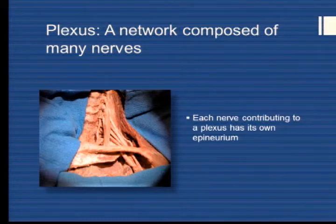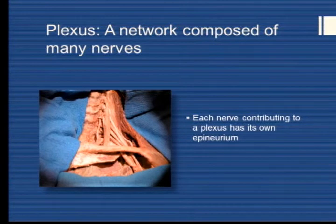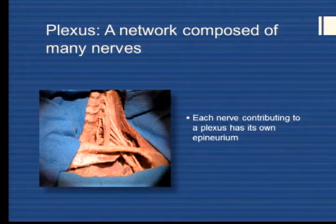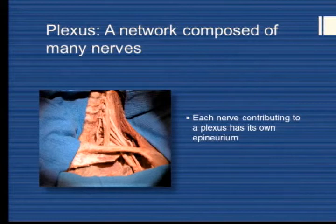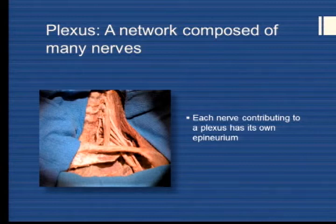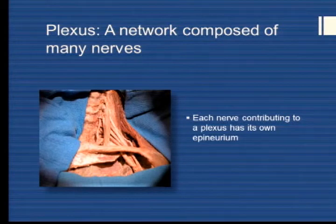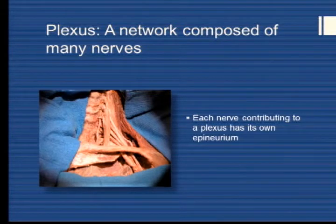By extension, when C5 and C6 come together, the upper trunk has its own epineurium. When the upper trunk splits into two divisions, each division is wrapped by an individual epineurium. So putting a needle in between — for instance, between the upper and middle trunk — is not only necessary to accomplish a plexus block, but should never be considered intraneural. That is what you must do in order to perform plexus anesthesia.